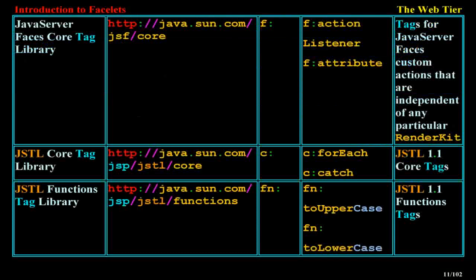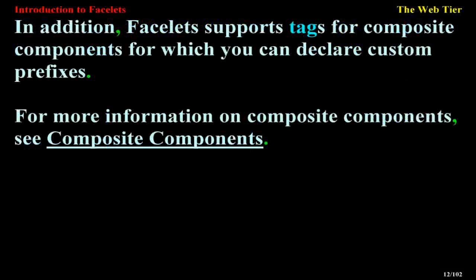Additional tag libraries include the JSTL core tag library (prefix: c), providing JSTL 1.1 core tags such as c:forEach and c:catch, and the JSTL functions tag library (prefix: fn), providing functions like fn:toUpperCase and fn:toLowerCase. Facelets also supports tags for composite components, for which you can declare custom prefixes. For more information on composite components, see the composite components section.